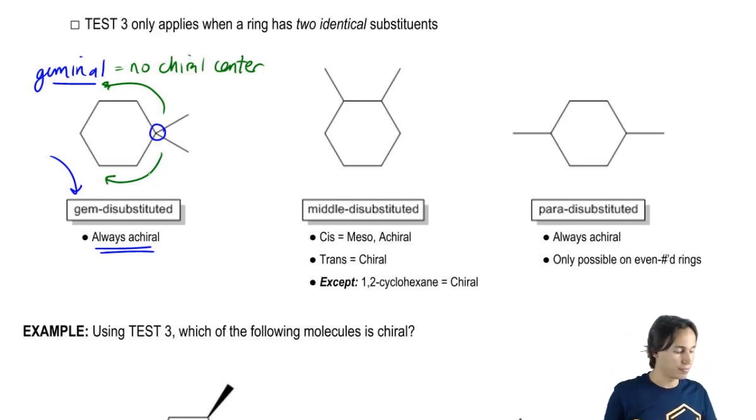Then let's go off to the other extreme, which is para-disubstituted. Now para is a word that we're going to use a lot more in Orgo 2. And what it means is across from. So it basically means or opposite to. My handwriting is getting worse and worse. Across from or also opposite to.